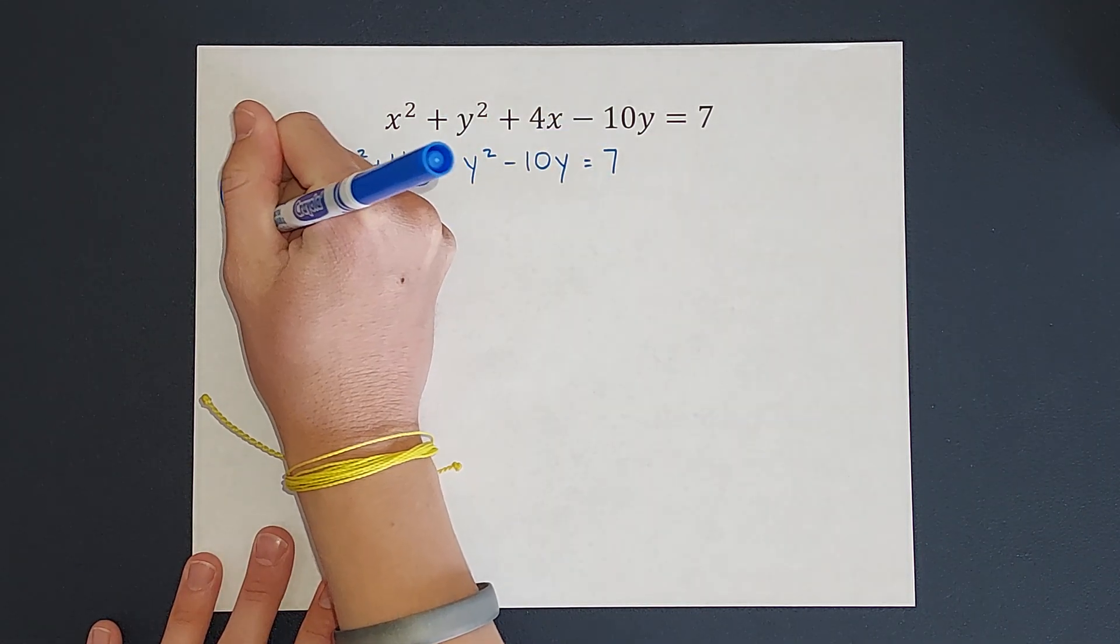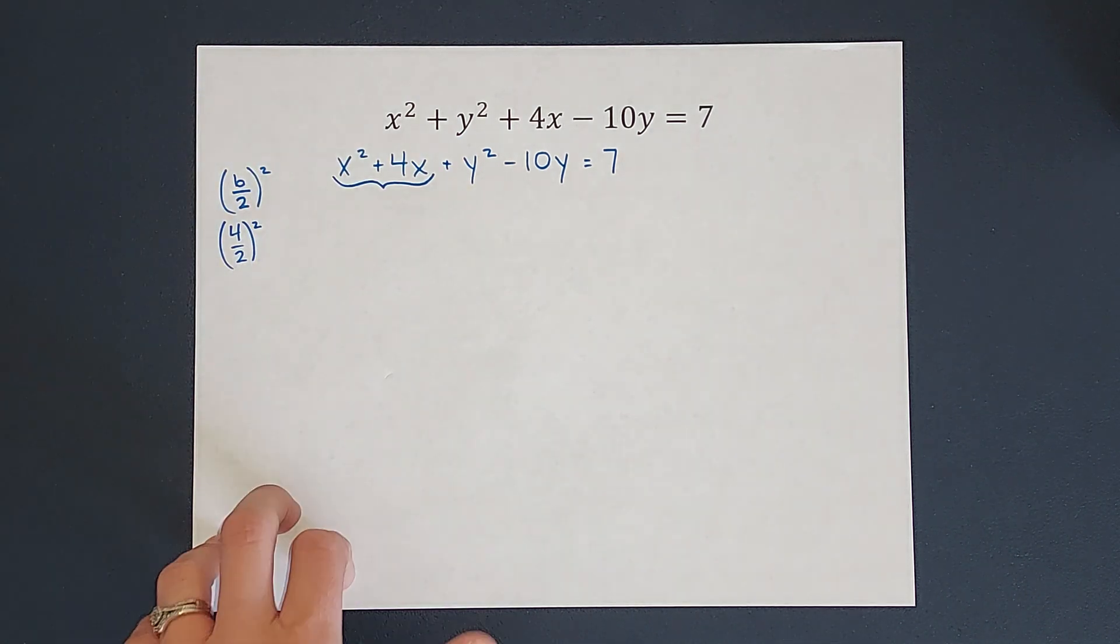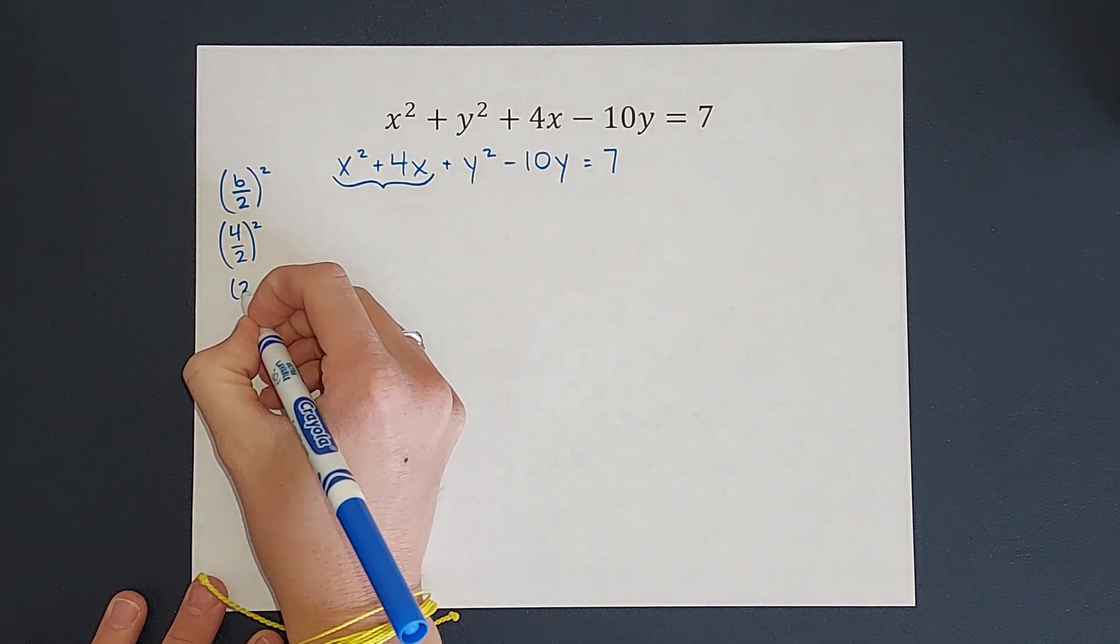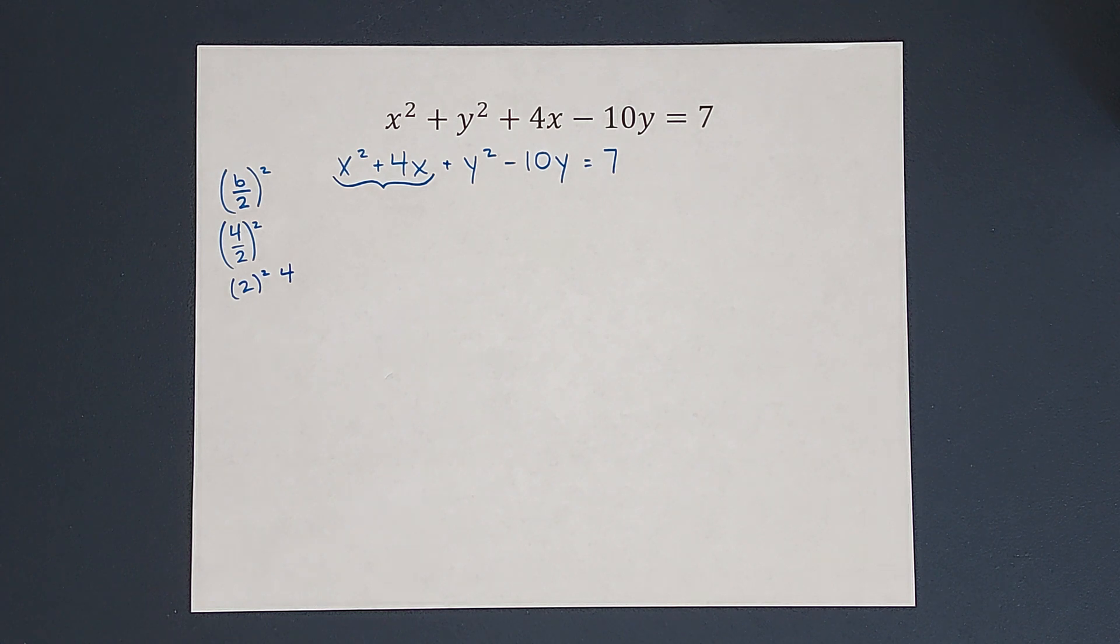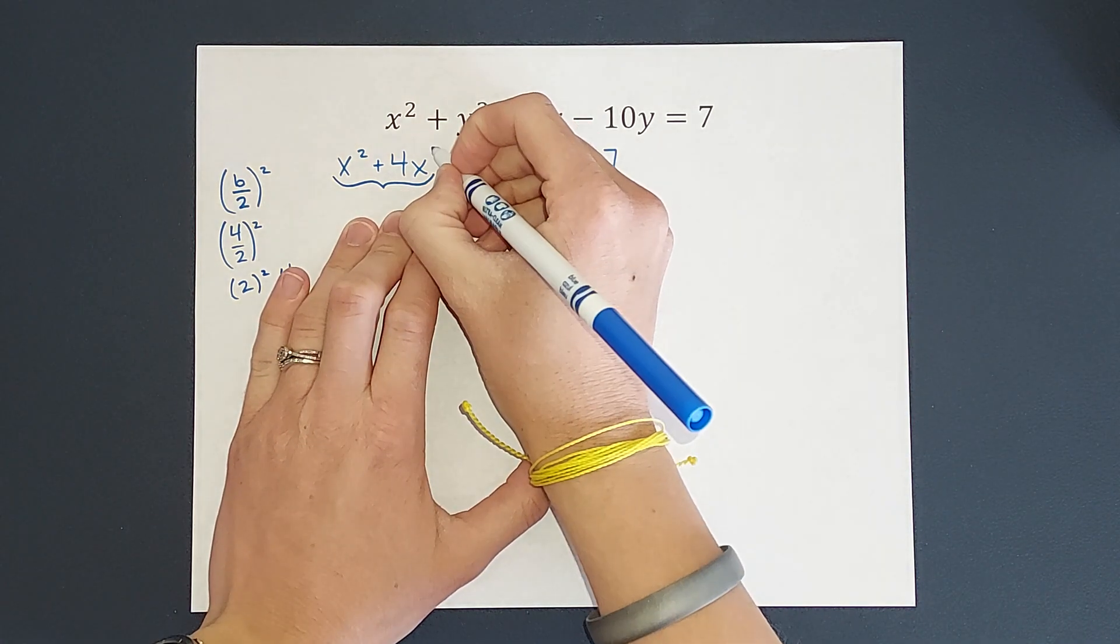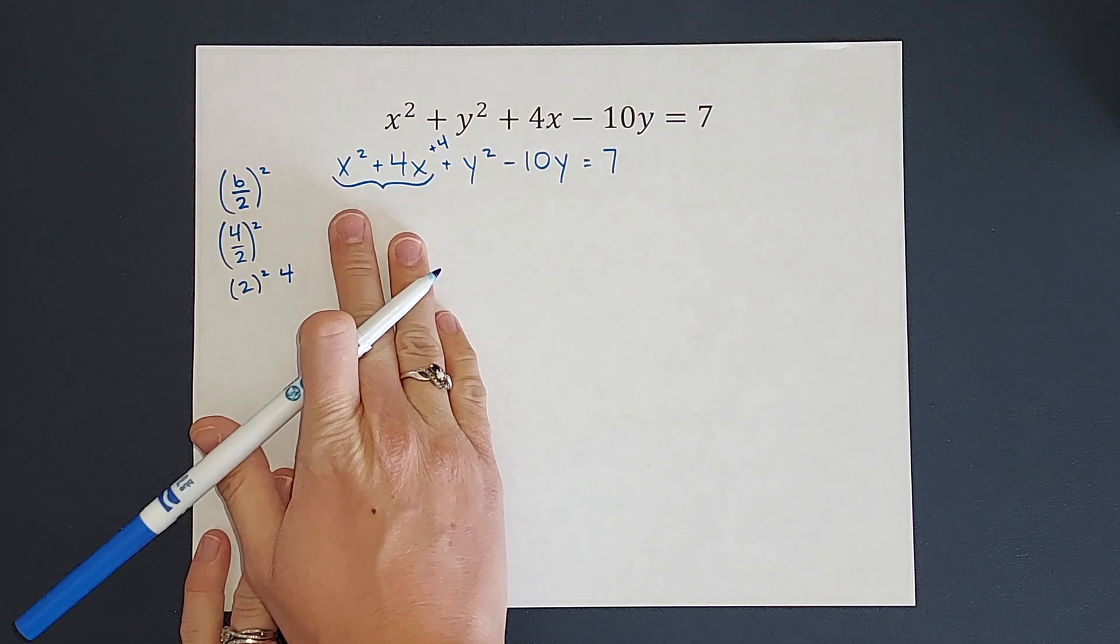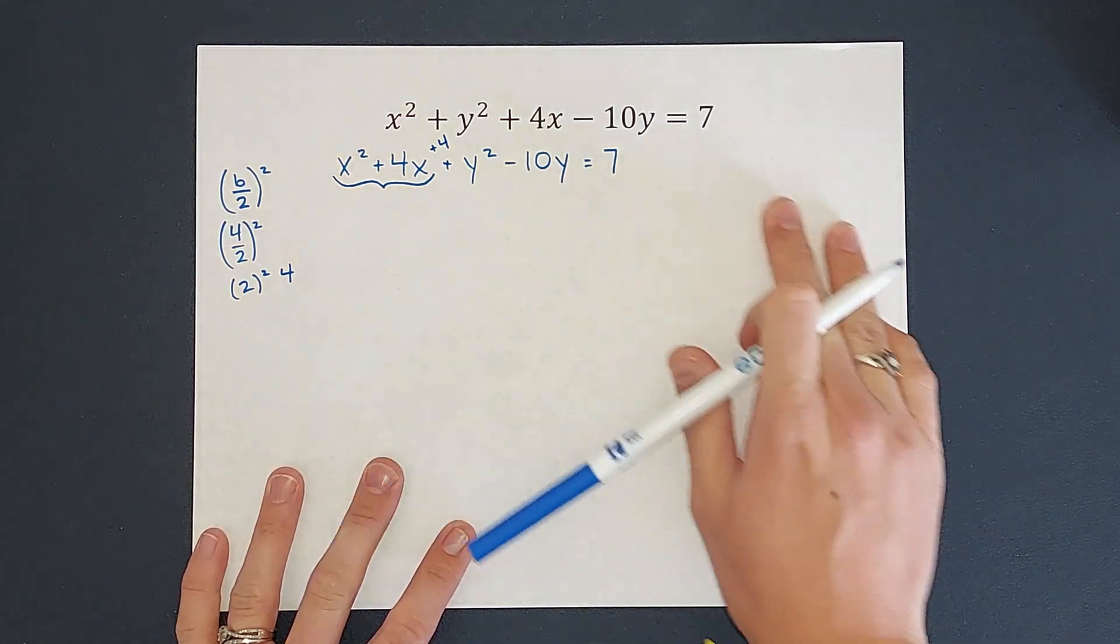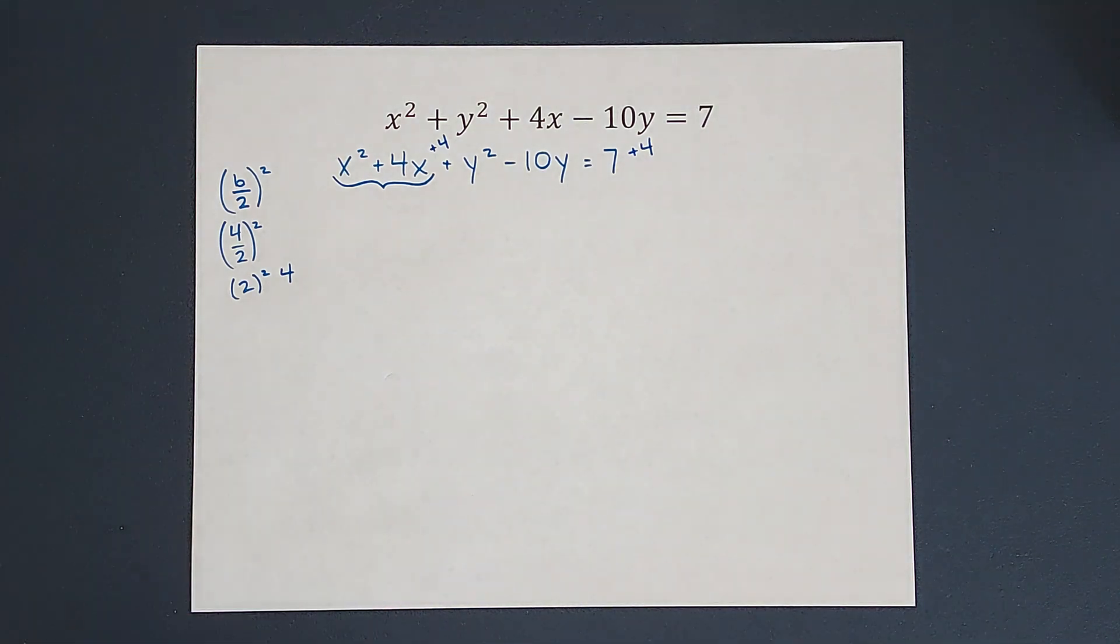So I'm going to take 4, divide it by 2, and square it. 4 divided by 2 gives me 2. And 2 squared gives me 4. So 4 is my magic number that I'm going to add that's going to help me factor this to a parentheses squared. So I'm going to add 4 to this side. I'm adding it to this side of the equal sign, which means I also need to add it to this side of the equal sign, right? We always want to keep things balanced.